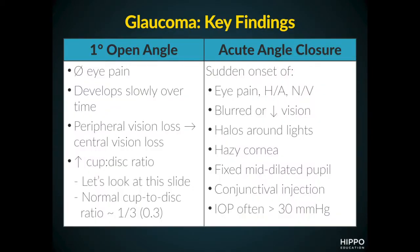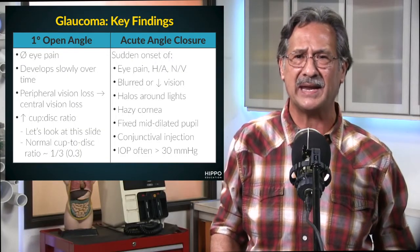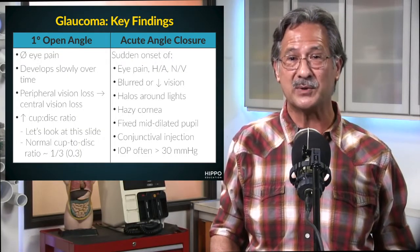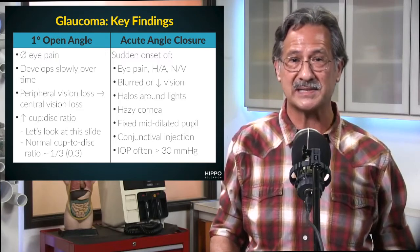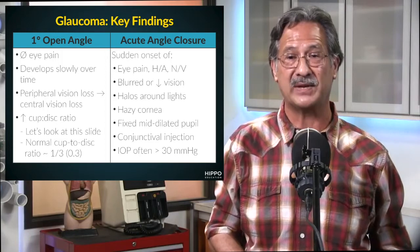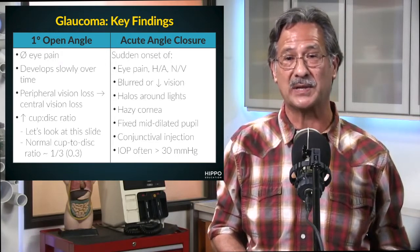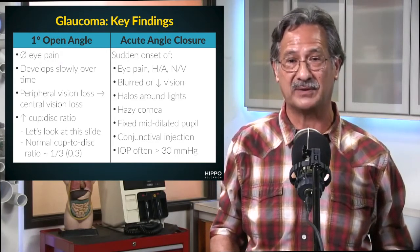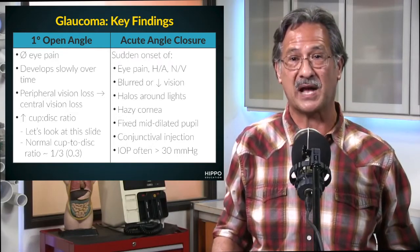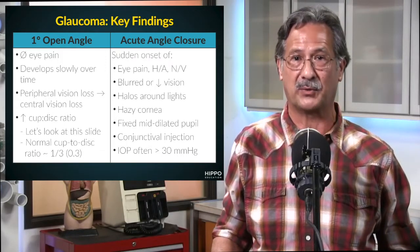Acute angle closure, on the other hand, gives us a sudden onset of eye pain — that's a key distinguishing feature between the two conditions. We also get headache, nausea, vomiting, blurred or decreased vision, halos around lights, and a hazy cornea. The other classic physical exam findings are a fixed mid-dilated pupil as well as conjunctival injection. If you were to measure the intraocular pressure, it's often greater than 30 millimeters of mercury.